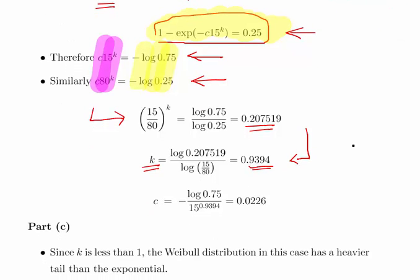Using one of those expressions there previously, you can work out what C is. C times 15 to the power of K is minus log of 0.75. So divide both sides by 15 to the power of K, 15 to the power of 0.9394. Bit of calculator work there. You should get C equals 0.0226.